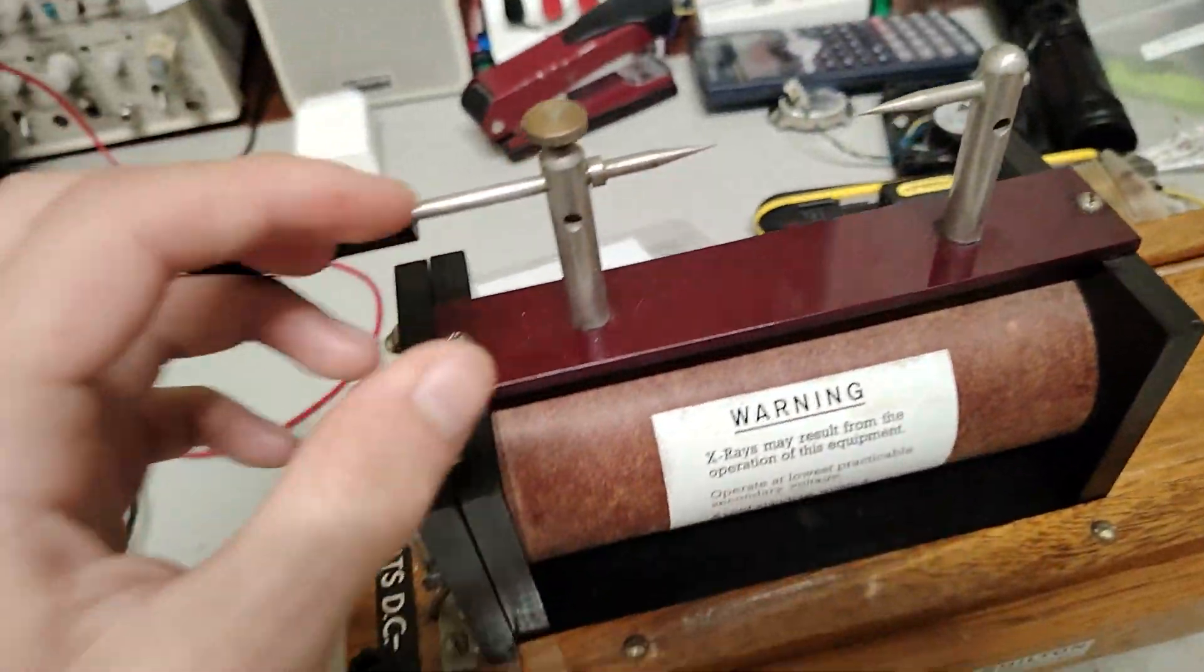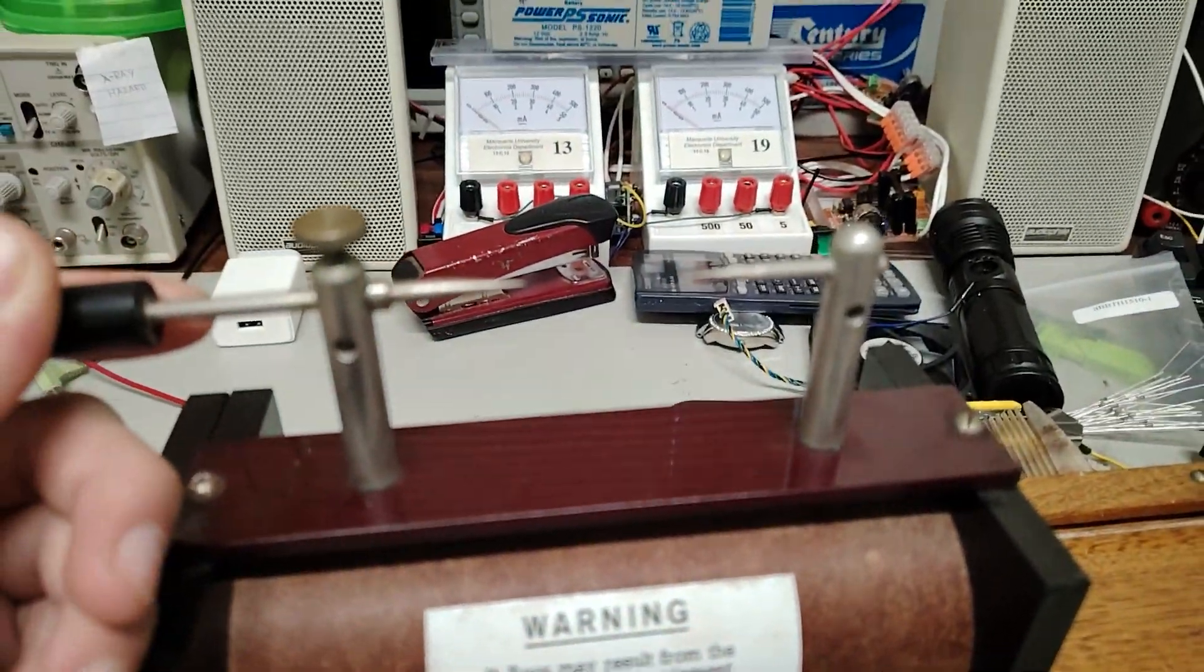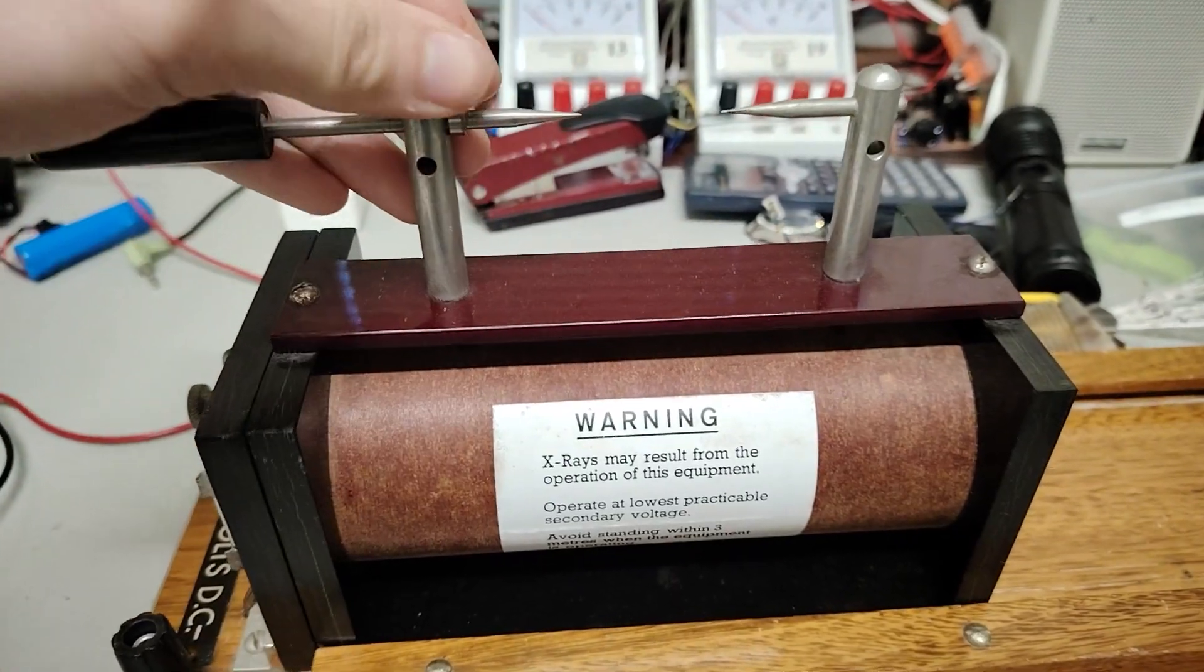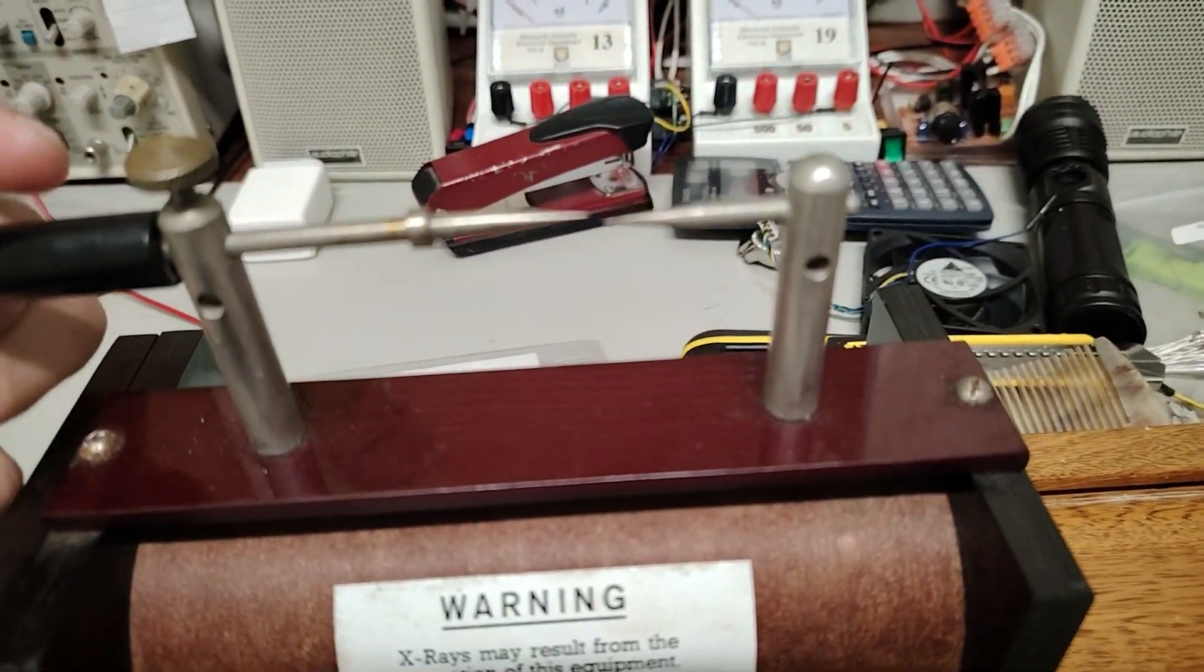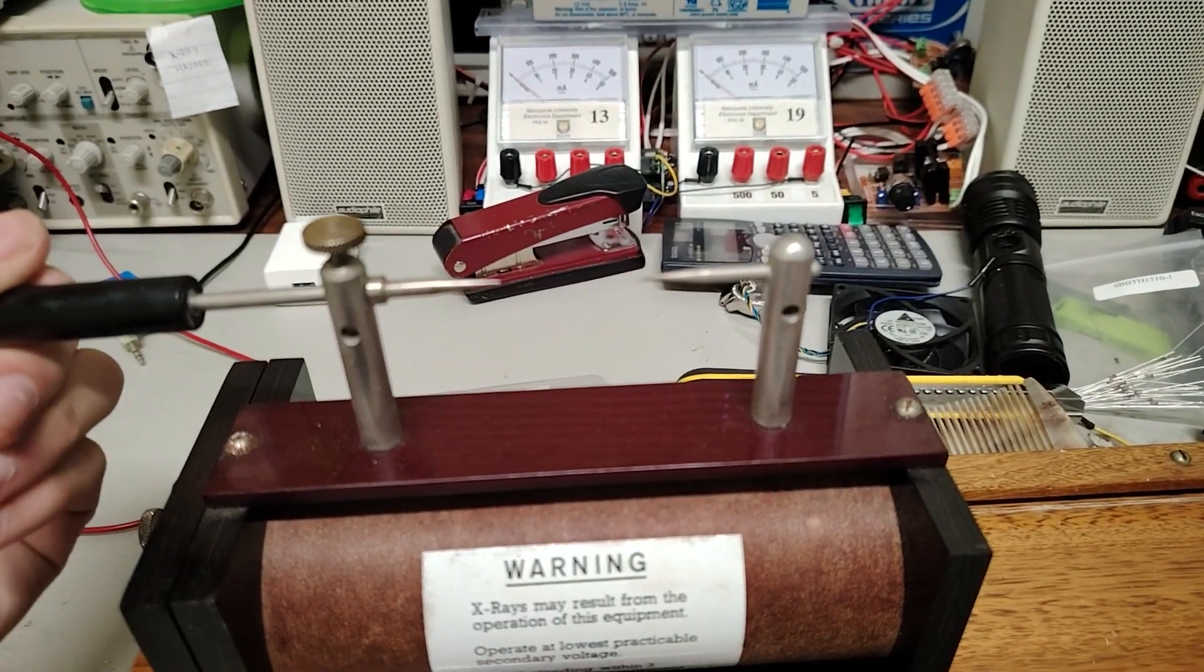So this is the spark gap which is set to three centimeters. I measured with a digital caliper, and it can be adjusted between 1.5 millimeters and three centimeters, which is here.